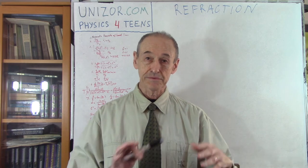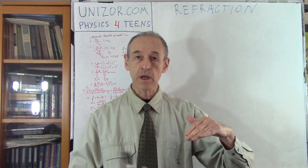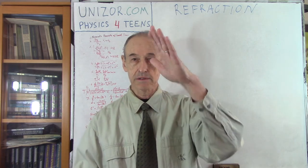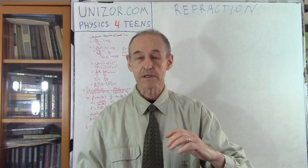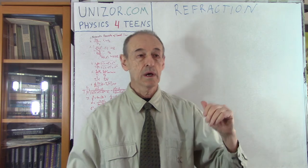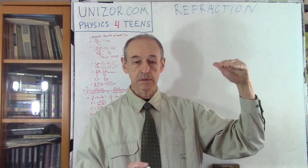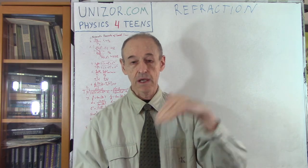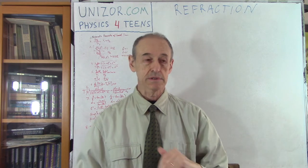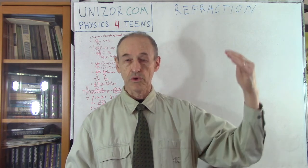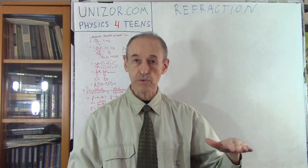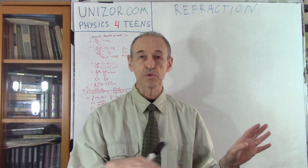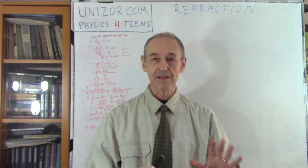We are familiar with reflection, when the light goes to some border between two different substances and then reflects back — like a mirror — back into the space where it came from. Refraction is when the ray of light actually penetrates the border between these two substances and goes into another substance. For example, light goes from air to water, so the surface of the water is the boundary, and we will assume that this surface is always a flat, ideal plane.